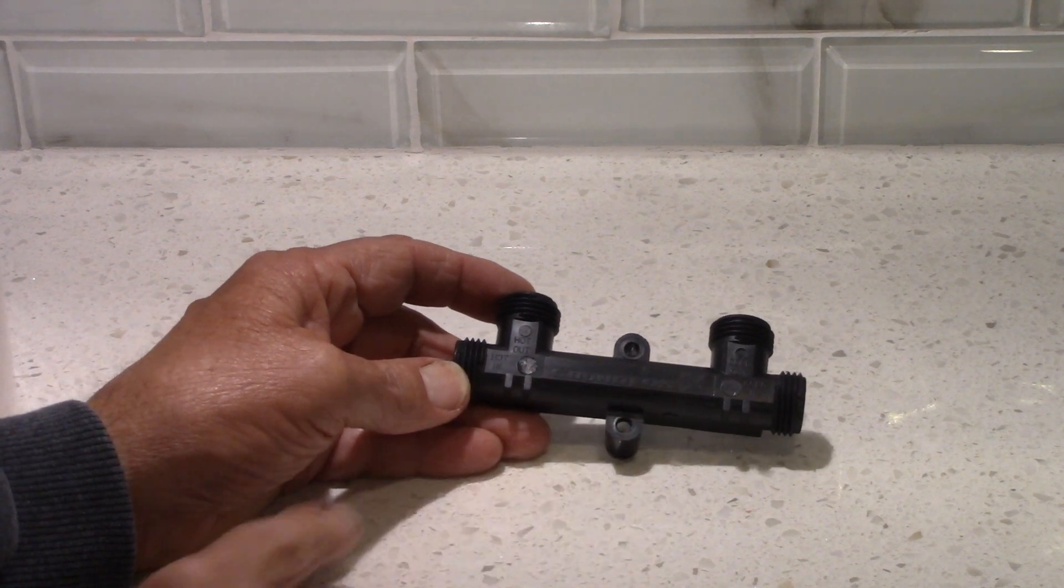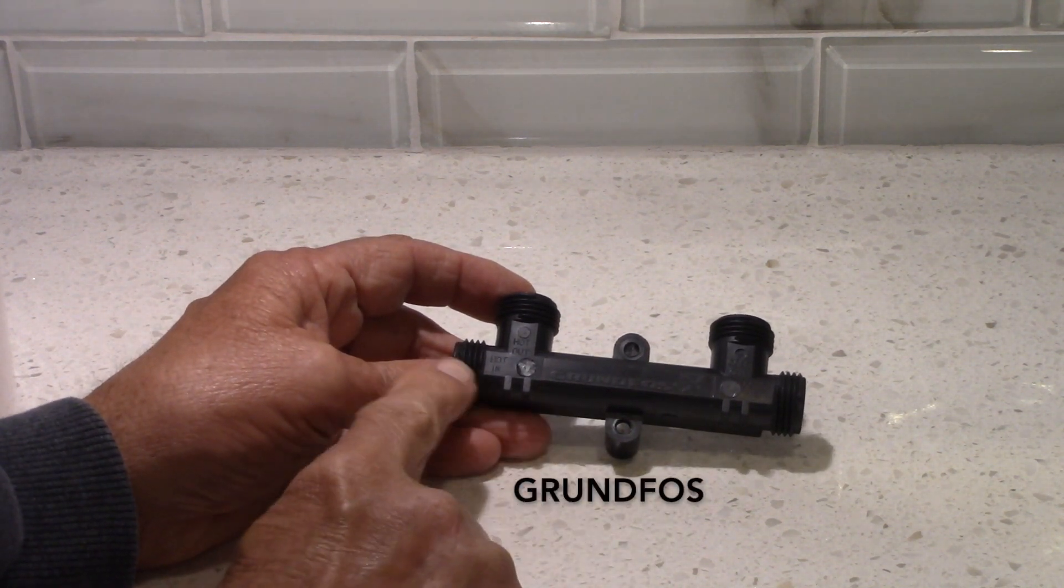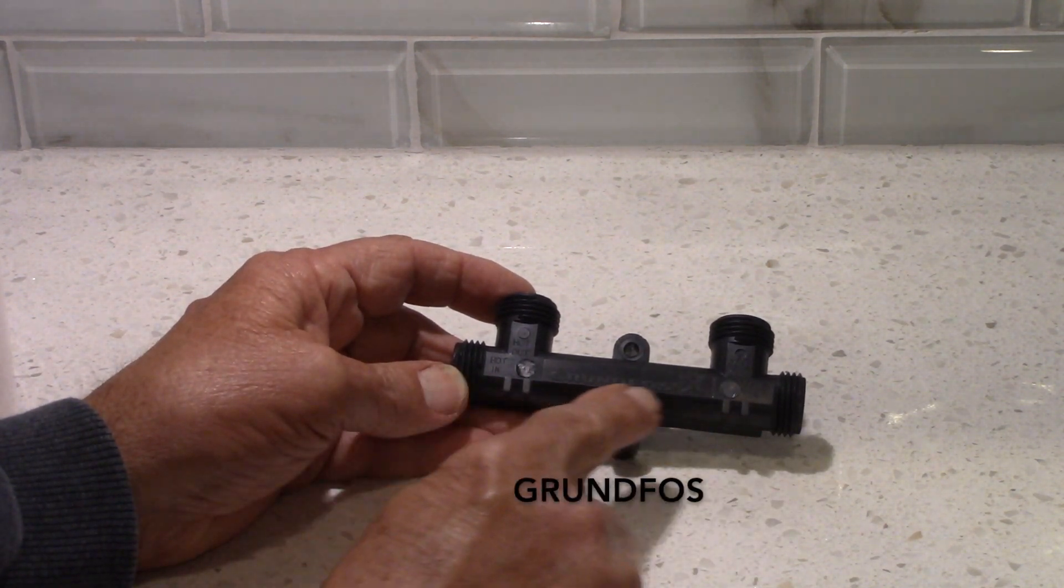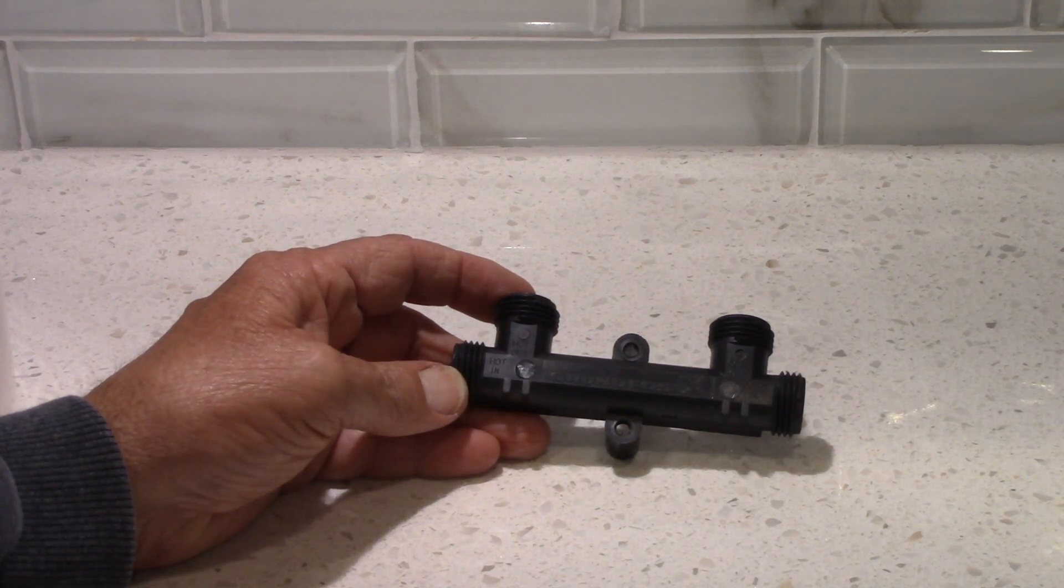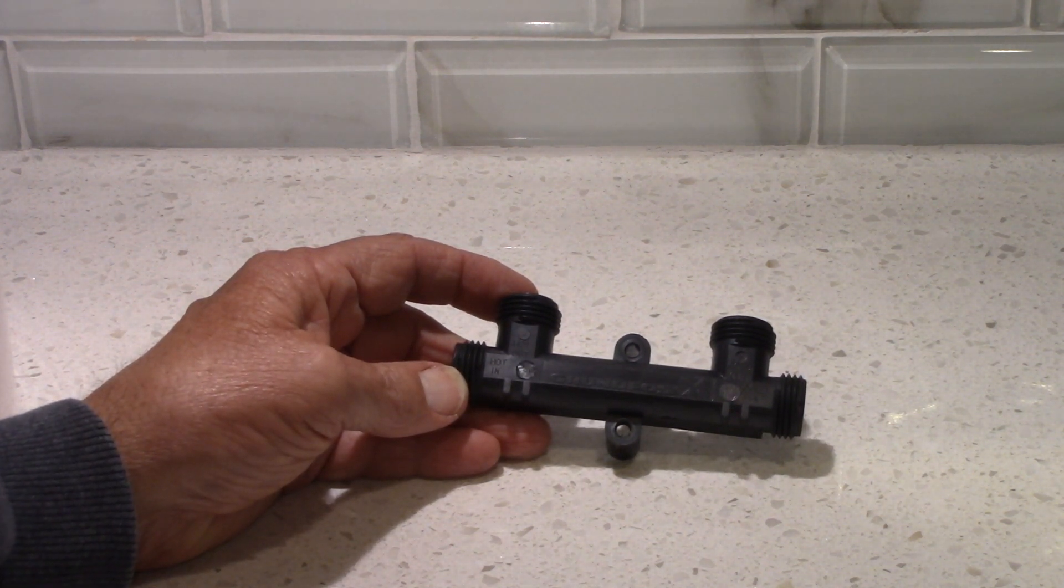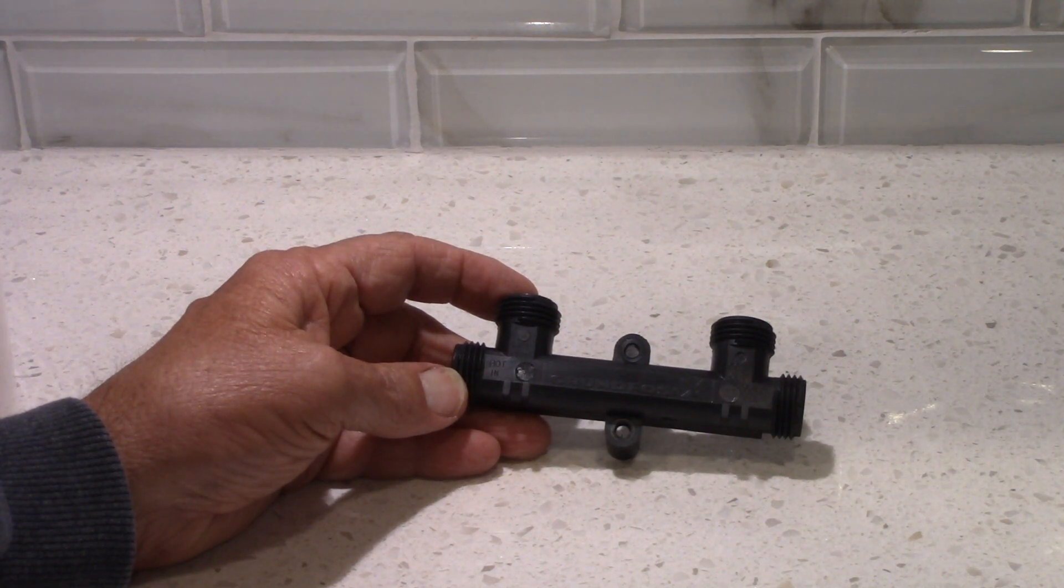What you see here is the Grundfos temperature regulating valve that is placed in all lines that are using the recirculating hot water pump.